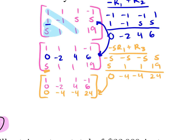To change the negative two to a one, I can multiply by negative one-half. So multiplying everything in that row by negative one-half: new row two is zero, one, negative two, negative three. The first and third rows stay the same.